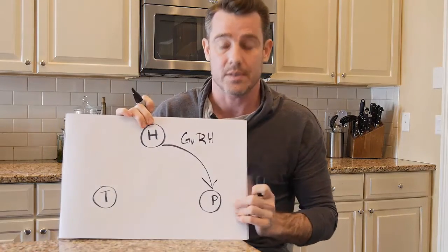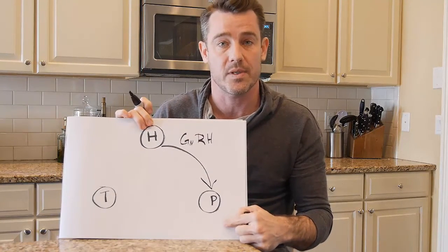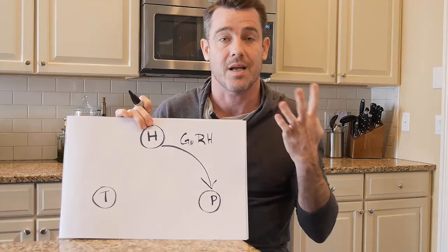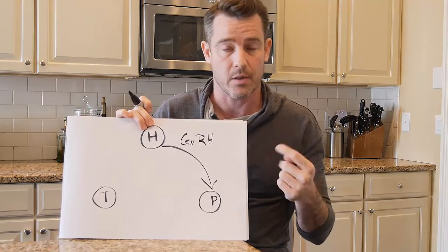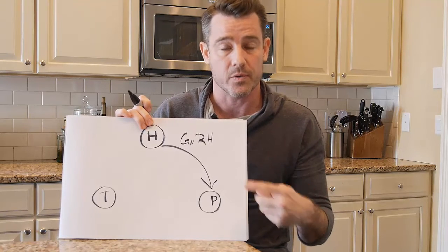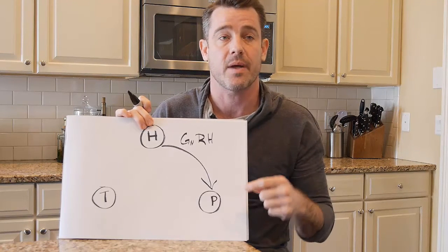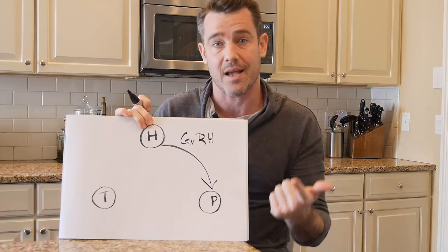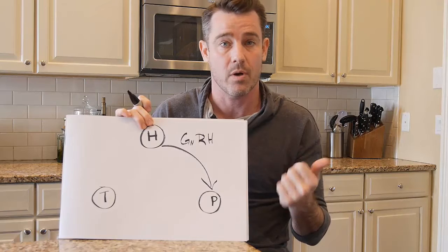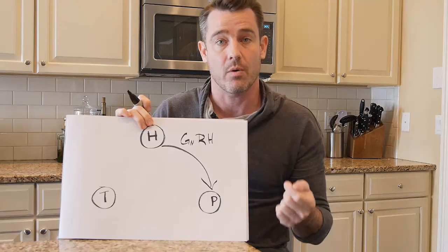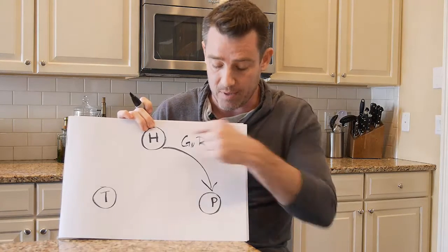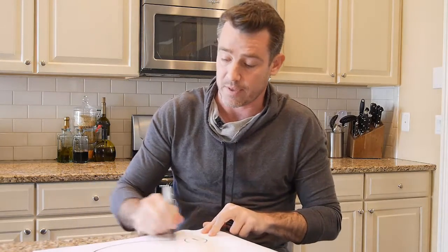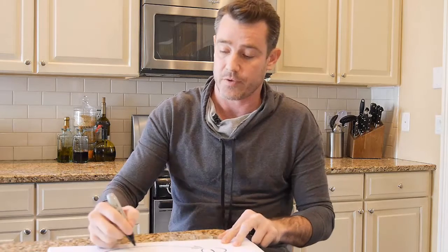Gonadotropin releasing hormone then gets dropped into the system to the pituitary. The pituitary then in turn releases what we call the gonadotropic hormones, or the gonadotropics. If you ever hear somebody saying the gonadotropics on a certain patient are low, that means LH and FSH — luteinizing hormone and follicle stimulating hormone — are low, meaning the pituitary is not releasing these gonadotropics for whatever reason.